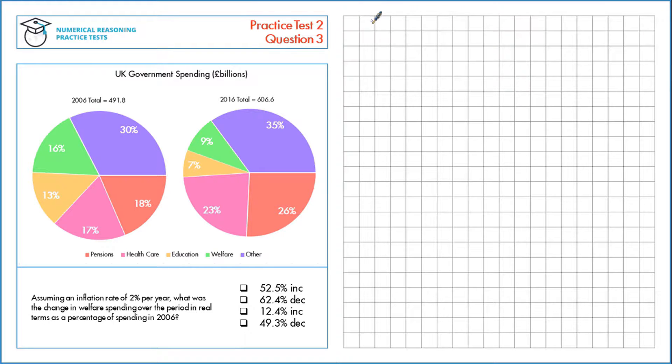Assuming an inflation rate of 2% per year, what was the change in welfare spending over the period in real terms as a percentage of spending in 2006? So for welfare, we're looking at this region here in 2006. We need to apply this inflation rate per year to this spending to see what this money is actually worth in 2016.